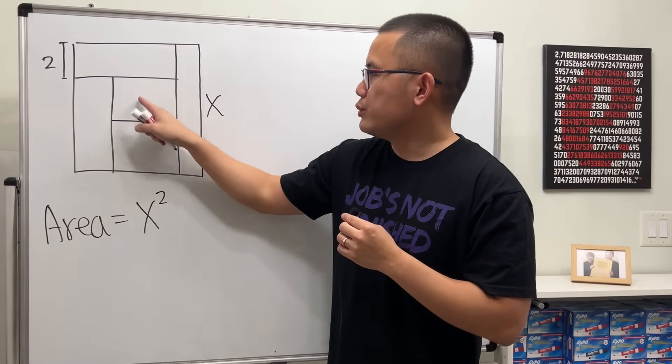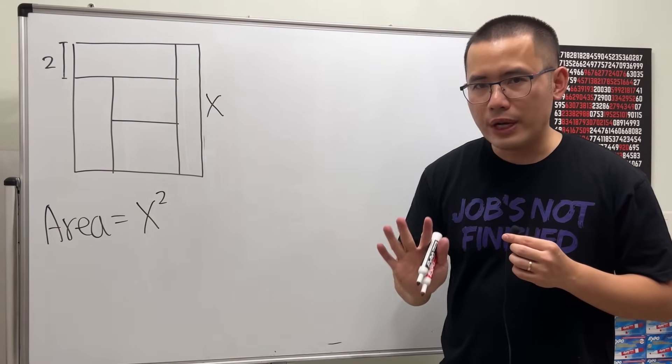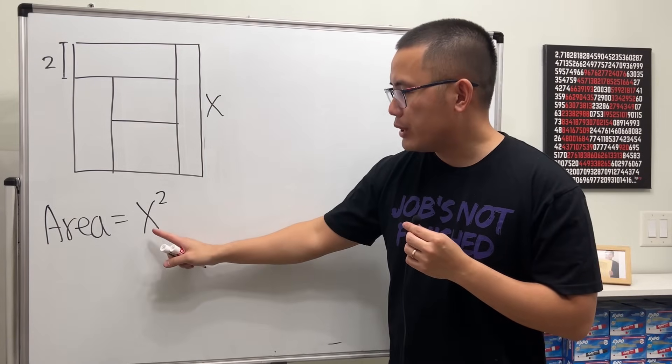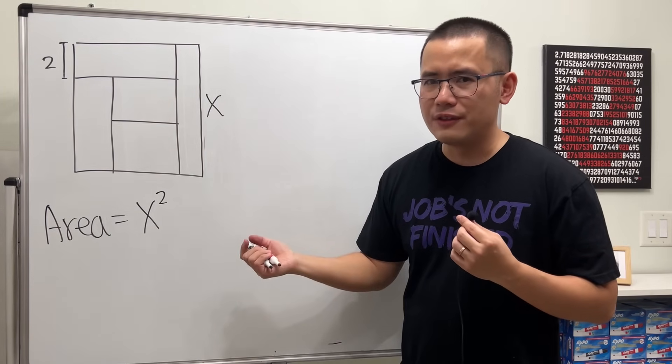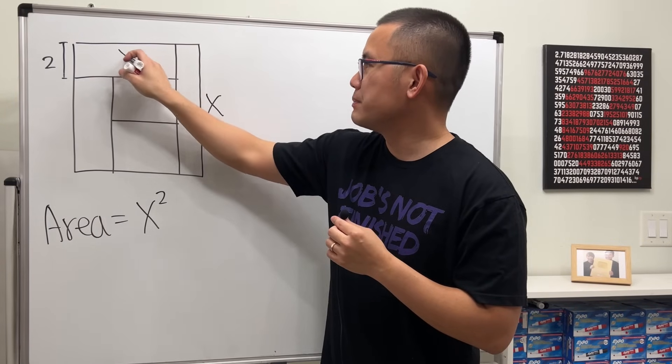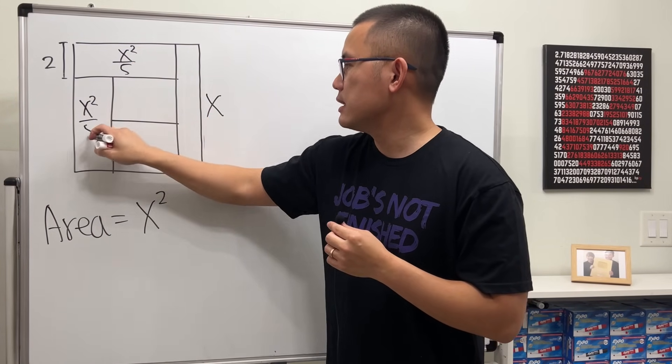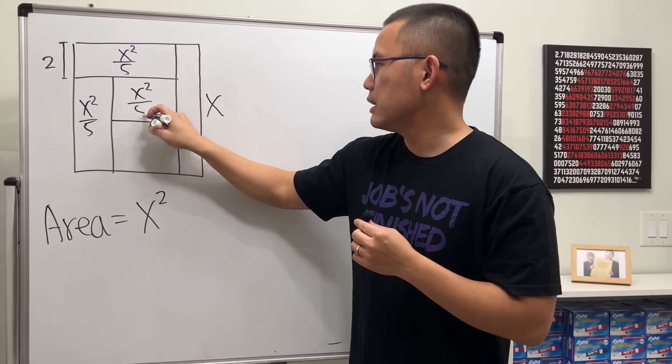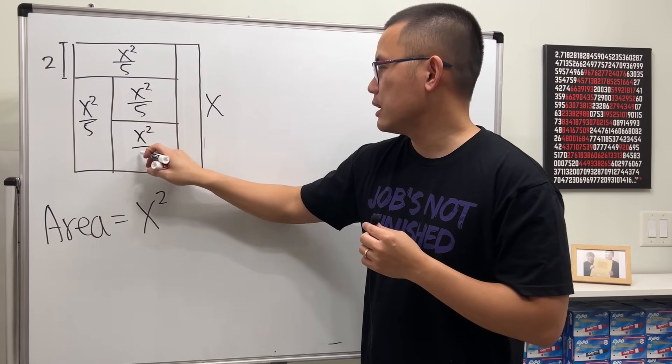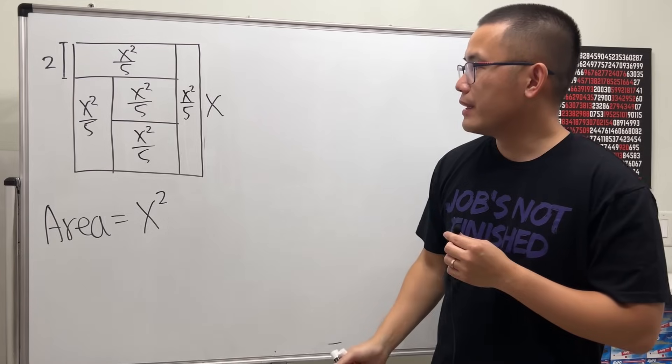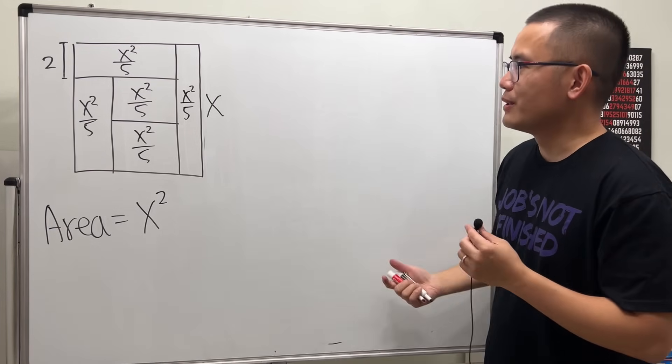All right, now here's the deal. One, two, three, four, five - we have five rectangles and they all have the same area. The total area is x squared, so we just have to divide it by five. That means this right here must be x squared over five. Likewise this, likewise this, likewise this, and also likewise that - x squared over five.